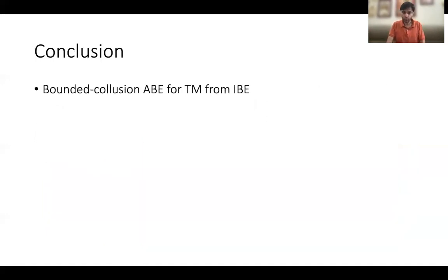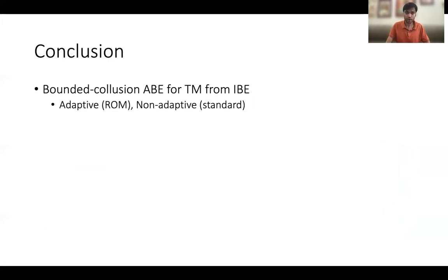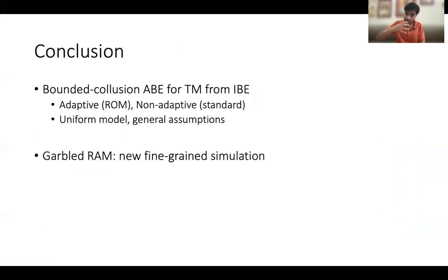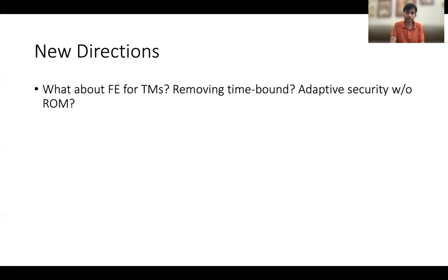To conclude: in this work, we build an attribute-based encryption scheme for Turing machines — the uniform model — from the general assumption of identity-based encryption in the bounded collusion model, thereby closing this gap. We prove adaptive security in the random oracle model and non-adaptive security in the standard model, using the uniform model and general assumption of identity-based encryption. We also show a new fine-grained simulation security property for garbled RAM, which might see more applications down the line.